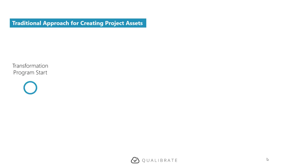At the start of your transformation program, you normally embark on some business process documentation exercise. It could be the case that you're looking to move back to SAP standard processes, or you're looking to optimize your business processes. This activity is normally done by business analysts at a high level — it doesn't usually include the detailed steps required within the SAP system, but rather a high-level overview of how the processes work end-to-end within the organization.